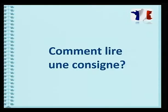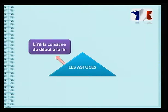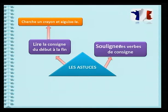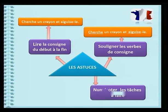Donc, comment savoir quoi faire quand tu te retrouves devant ton manuel? Voilà quelques astuces. D'abord, tu dois lire la consigne du début à la fin. Voici une consigne qui se trouve à la page 6 de ton manuel: Cherche un crayon et aiguise-le. Puis, tu soulignes les verbes de consigne qui te disent ce que tu dois faire comme tâche: Cherche, aiguise. Ensuite, tu numérotes les tâches après avoir souligné les verbes de consigne.